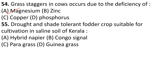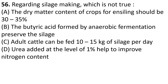For crops suitable for cultivation in saline soil of Kerala — dropped and shade tolerant — the answer is Option D: Guinea grass.